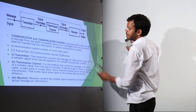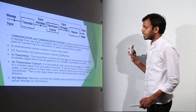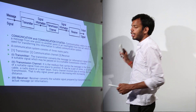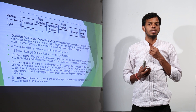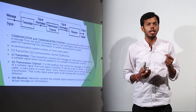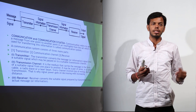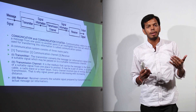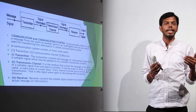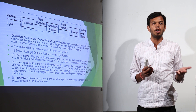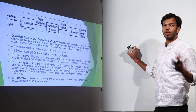A communication system consists of three main parts: transmitter, communication channel, and receiver. A transmitter converts the message into a suitable signal. For example, whatever I am saying is being received by this mic, which converts the audio signal to an electrical signal. Since the mic is not attached by wire, the electrical signal is then converted into electromagnetic waves sent to a receiver elsewhere in this room, which converts it back to electrical signals and stores it as digital bits — 1s and 0s.